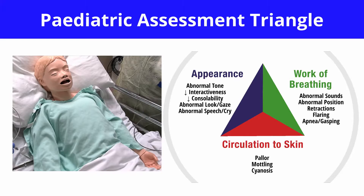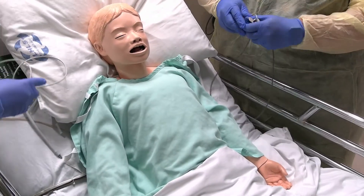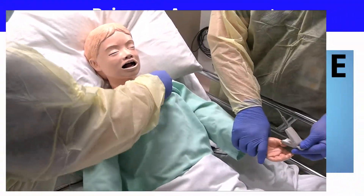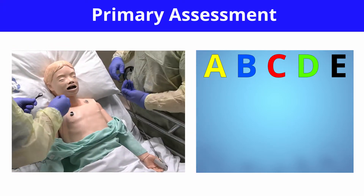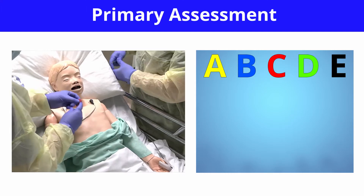When this child arrives in your emergency department, he appears quite anxious and is sitting in a tripod position, which is common for a child in respiratory distress. There is a moderate work of breathing with audible wheezing, noticeable retractions, a prolonged expiratory phase, and he appears to be quite tachypneic with nasal flaring. He is pale, but you note his lips are pink. Now you will want to place the child on a cardiorespiratory monitor as well as check oximetry while going through the primary assessment.